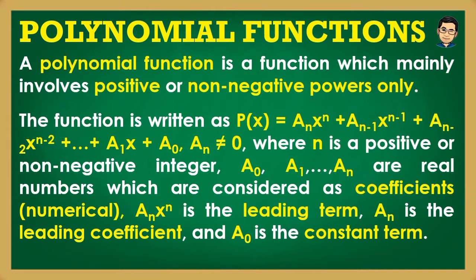a₀, a₁, up to aₙ are real numbers considered as coefficients — numerical coefficients. They can be positive or negative. aₙxⁿ is the leading term — yung nauuna. From the leading term, makukuha natin yung leading coefficient, which is aₙ. And finally, a₀ is the constant term — yung walang variable.